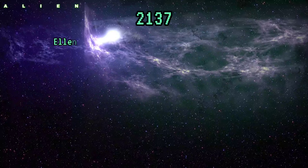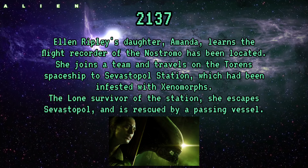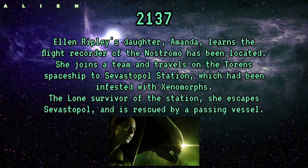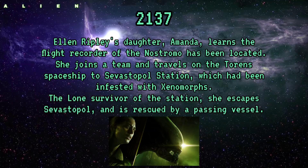2137: Ellen Ripley's daughter Amanda learns the flight recorder of the Nostromo has been located. She joins a team and travels on the Torrens spaceship to Sevastopol Station, which has been infested with xenomorphs. As the lone survivor of the station, she escapes Sevastopol and is rescued by a passing vessel.